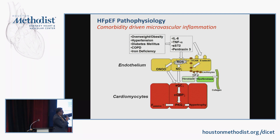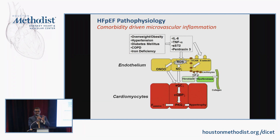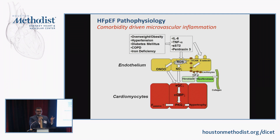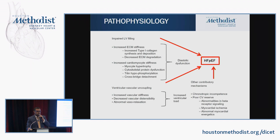These inflammatory markers at the level of the endothelium also result in creation of reactive oxygen species which scavenge nitric oxide. You can think of the nitric oxide pathway as opposing the neurohormonal pathway — RAS and sympathetic activation — that is the pathophysiology of heart failure with reduced EF. These two downstream mechanisms result in hypertrophy and fibrosis, which is the hallmark of HFpEF. So a state of chronic inflammation is the pathophysiology of HFpEF.